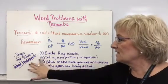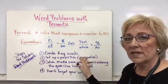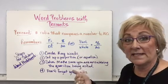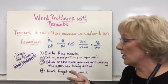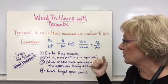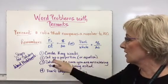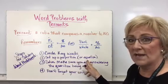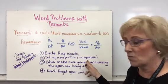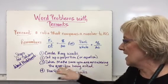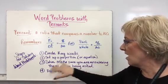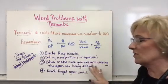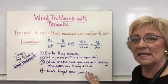The steps in solving word problems: we're going to circle the key words that we know — we need 'is' and 'of' — and we already know the percent. We're going to set up a proportion or an equation, whichever is easiest, and then solve. We're going to make sure that we are answering the question that is being asked.